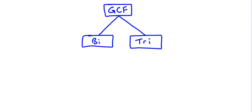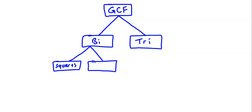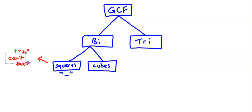If you're dealing with a binomial, we've looked at two different types: perfect squares and perfect cubes. If it's perfect squares, then it must be subtraction to factor it. If it's addition, you can't factor it. But if it's subtraction, you're going to have two parentheses — both binomials — one with a plus and one with a minus.